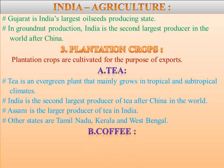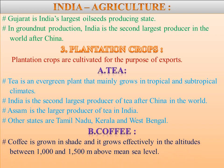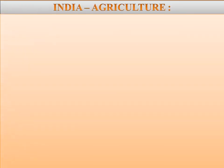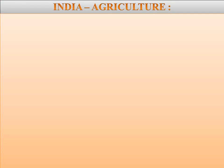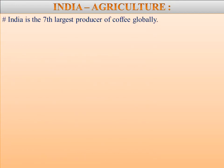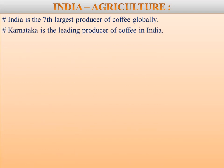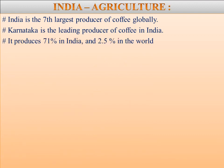Next we are going to learn about coffee. Coffee is grown in shade and is grown effectively at an altitude between 1000 and 1500 meters above mean sea level. There are two main varieties of coffee: Arabica, which is high quality and cultivated more in India, and Robusta, which is inferior quality. India is the seventh largest producer of coffee globally. Karnataka is the leading producer of coffee in India, producing 71% of India's coffee and 2.5% of the world's coffee. Source: Coffee Board of India, 2018.